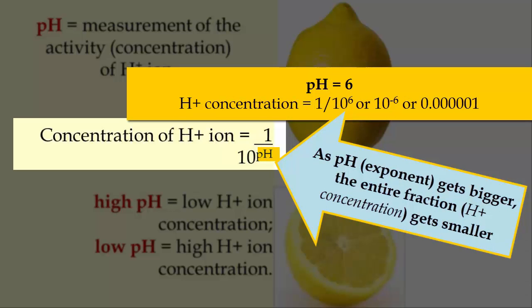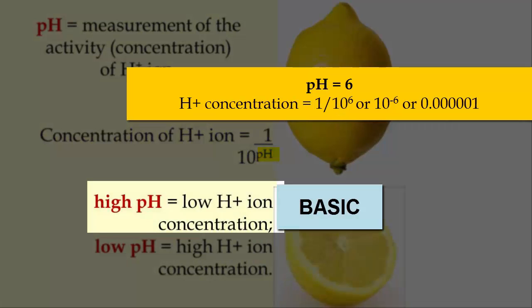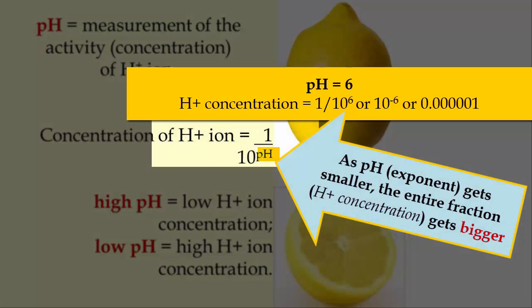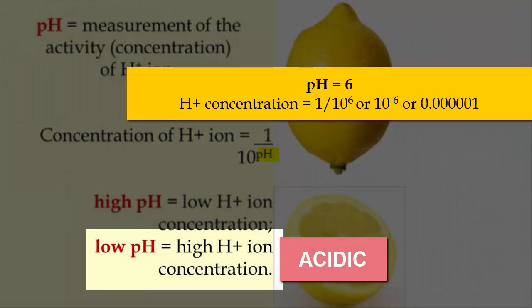As the pH or exponent gets larger, the denominator of the fraction gets larger, which means the entire fraction is now a smaller and smaller number, and the concentration of the H+ ion is low. High pH number equals low hydrogen ion concentration equals basic solution. When the exponent decreases, the denominator gets smaller, which makes the fraction bigger. Low pH equals high H+ equals more acidic.